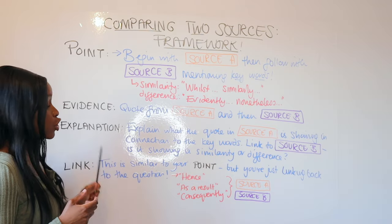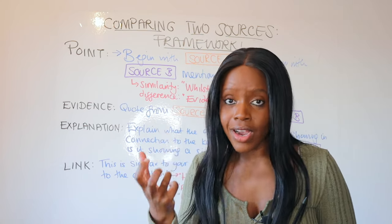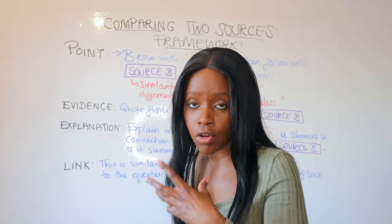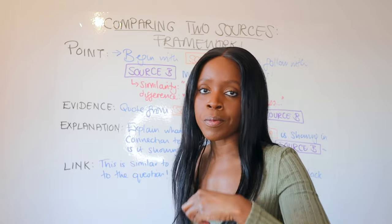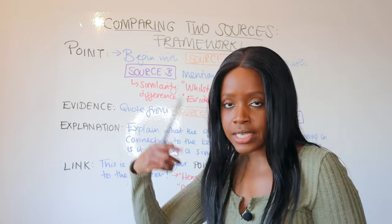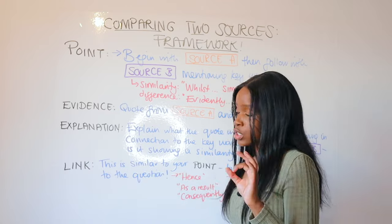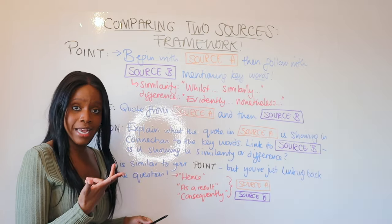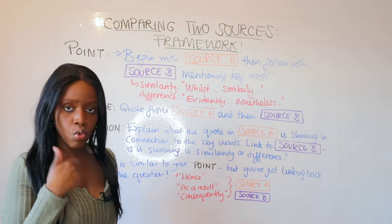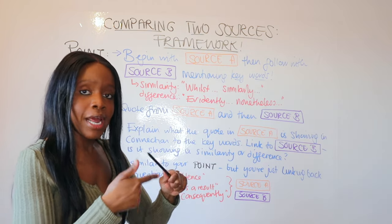Then in step number three, you go into your explanation. The bulk of your marks reside in this part of your PEEL paragraph. For question number two, this is where you show your understanding of the similarities or differences — you're summarizing and going into detail about why they are similar or different. For question number four, the viewpoints and perspective question, this is where you include methods such as language and structure techniques that either or both writers use. Your explanation is super important — this is where the bulk of your marks reside.